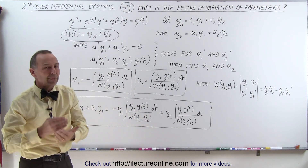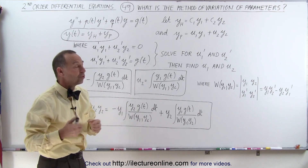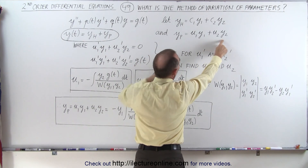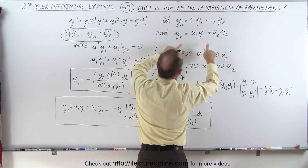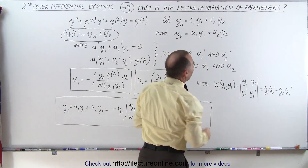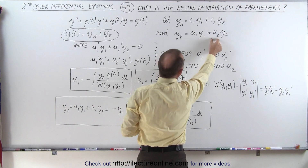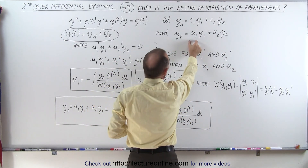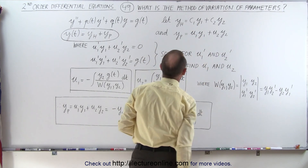How do we find the particular solution using the method of variation of parameters? The assumption is that the particular solution will have the form u1·y1 + u2·y2, where y1 and y2 are again the solutions to the homogeneous equation, and u1 and u2 are two other functions of t that we need to find. The whole effort of this method is to determine what u1 and u2 are.